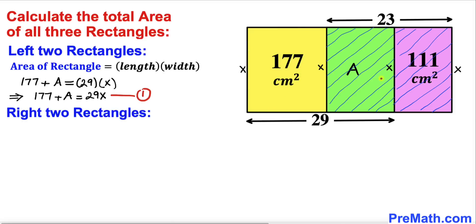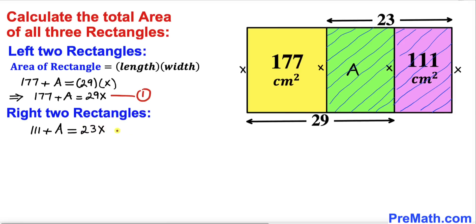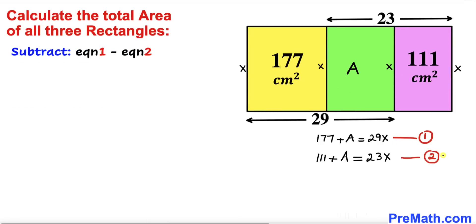Now let's focus on the two right rectangles that are shaded. The total area of that shaded region is A plus 111. Using area equals length times width, our length is 23 and our width is x, so A plus 111 equals 23x. Let's call this Equation 2.